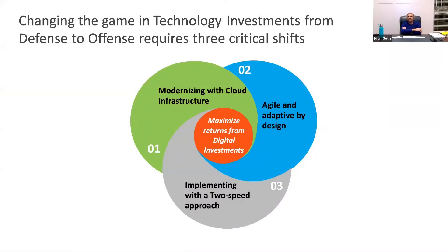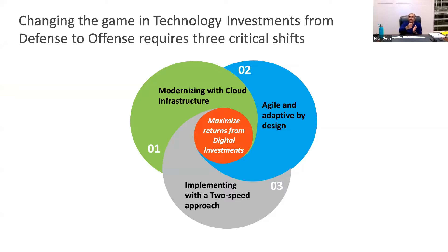Because of all the challenges I talked about in the previous slide, technology functions are always playing defense — they are playing a catch-up game. By defense, I mean people are throwing things at you and you're just trying to catch them. By offense, I mean you are in a lead position, able to shape things and drive the strategy. But most times today in legacy companies, technology is playing defense, not offense.